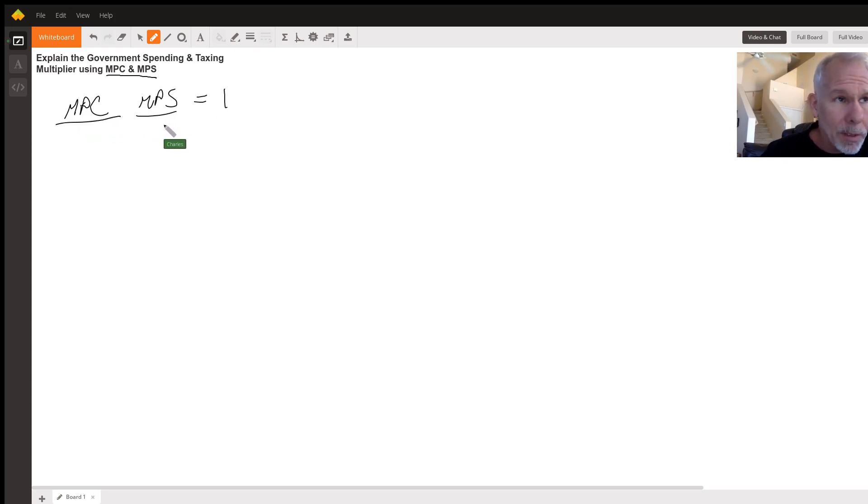Almost all of the AP exam questions are going to start off by giving you your MPC. So if they give you an MPC of 0.8, your MPS has to be 0.2. 0.8 and 0.2 equal one. If your MPC is 0.75, your MPS has to be 0.25. If your MPC is 0.5, your MPS has to be 0.5 also. 0.5 and 0.5 equal one.